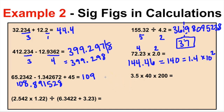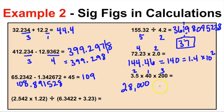Next: 3.5 times 40 times 200 equals 28,000. If left like this, it's incorrect. This has two sig figs, this has one, and this has three, so our answer can only be one sig fig long. The eight rounds the two up to three, giving us 30,000 — not just 3, but 30,000. So our final answer is 30,000.